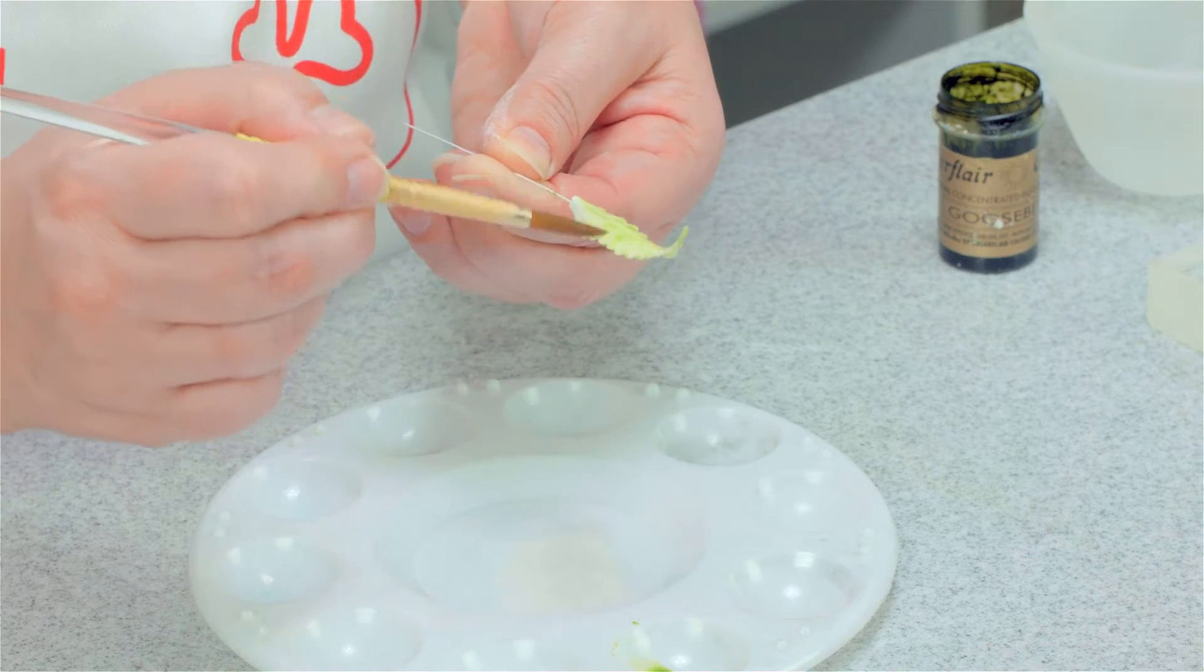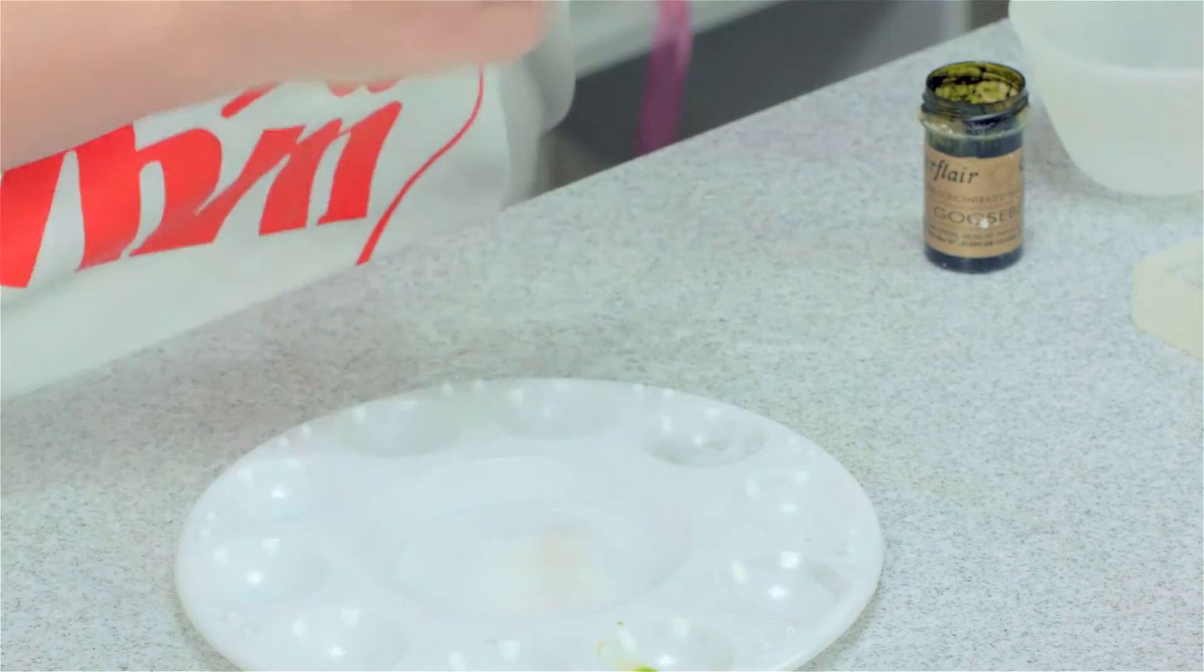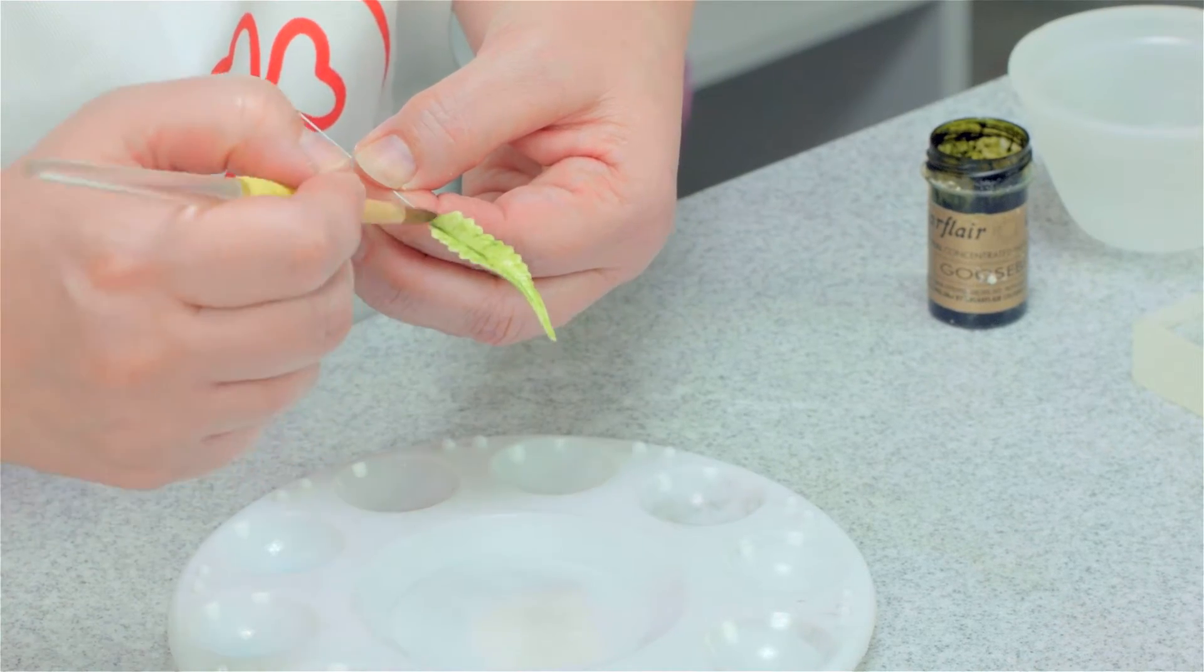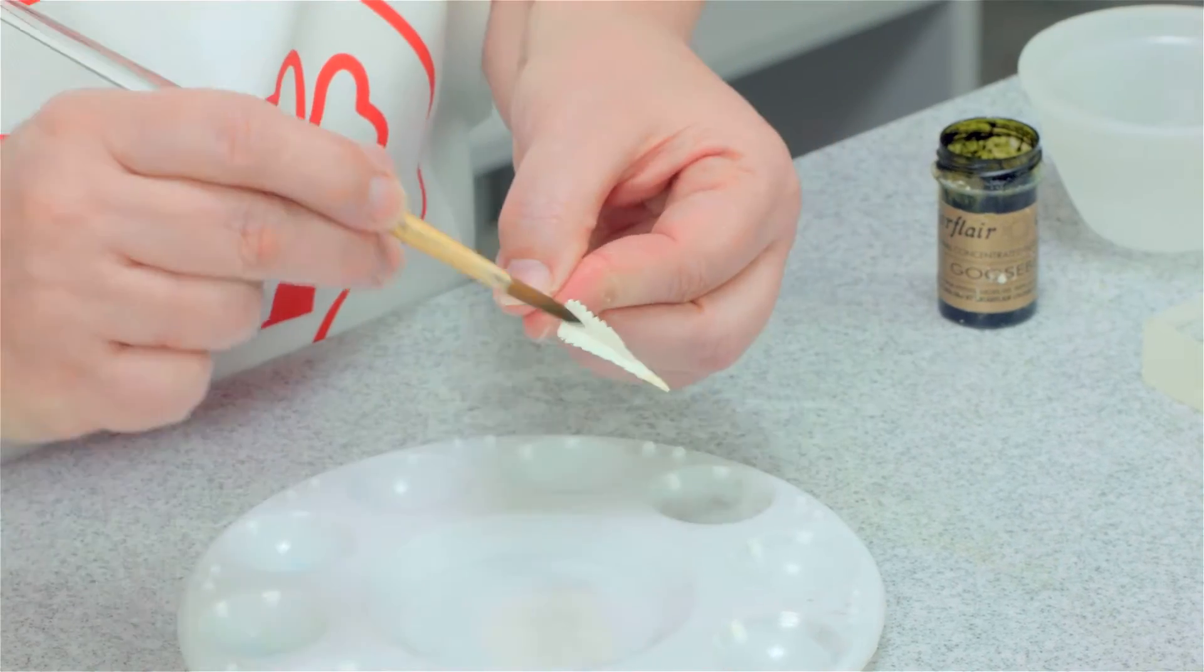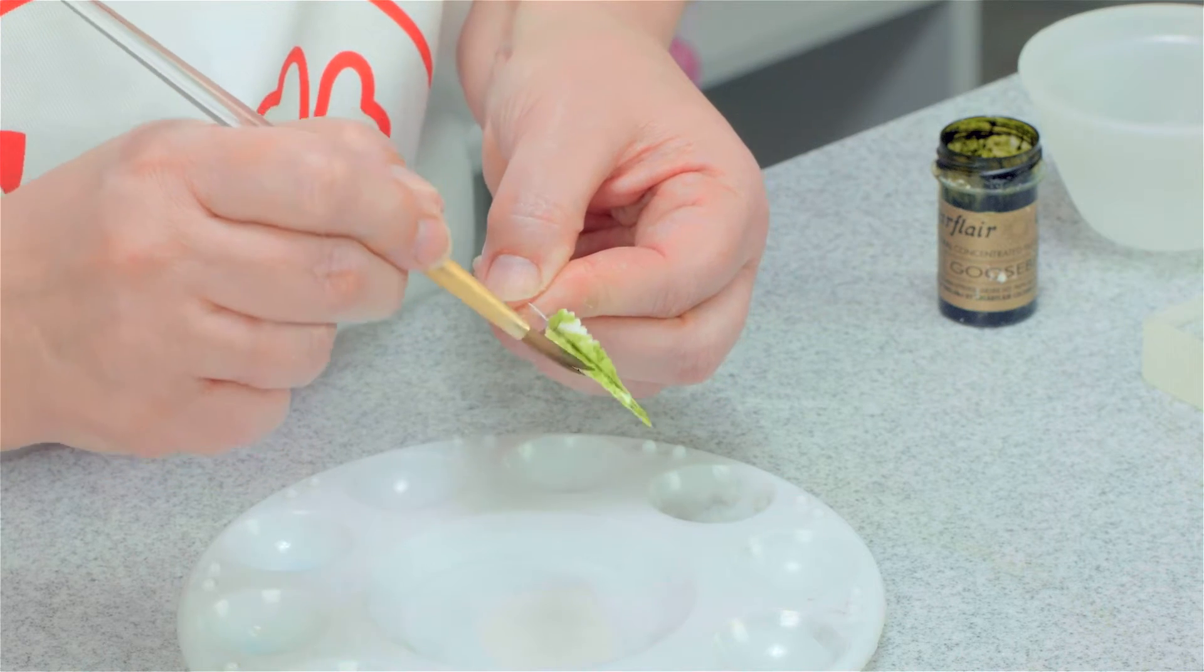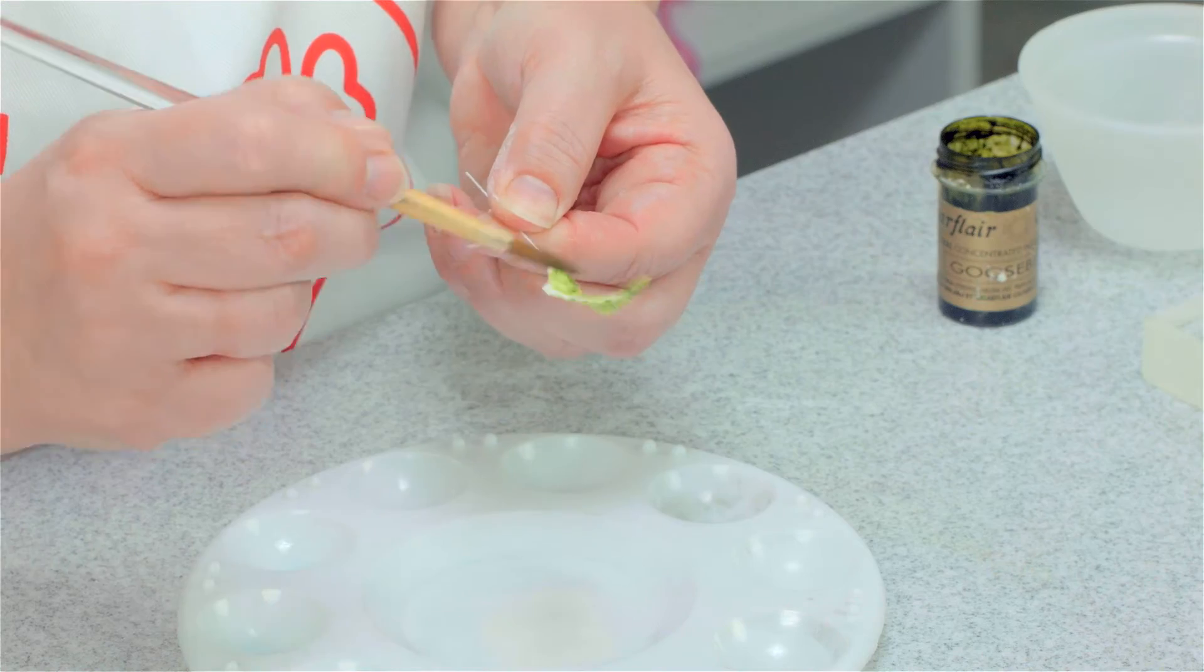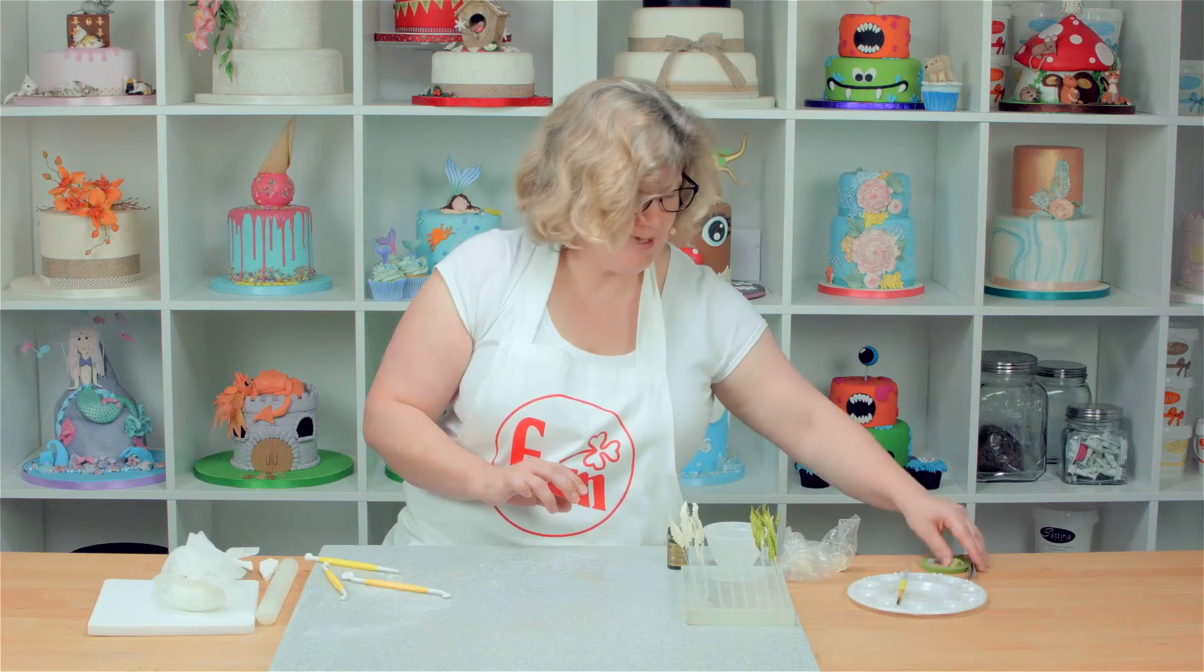When you paint it the color runs into the veining so it shows up the veining a little bit more. It's looking a little bit lighter, I'm just going to make it a bit of a stronger color. Then you need to leave them to dry completely before you assemble them.